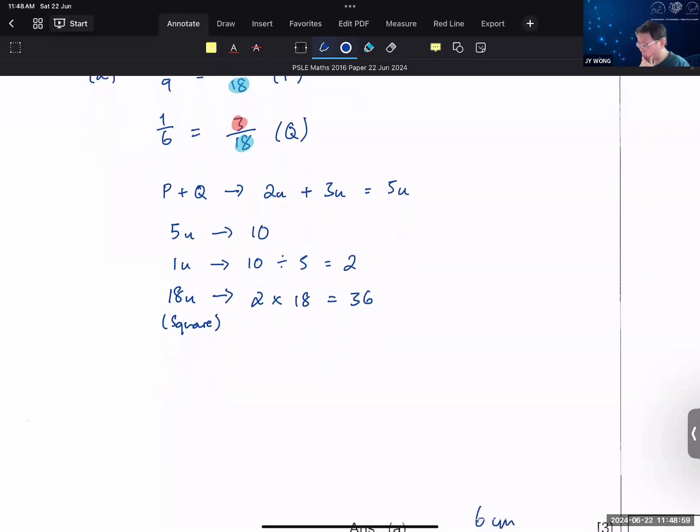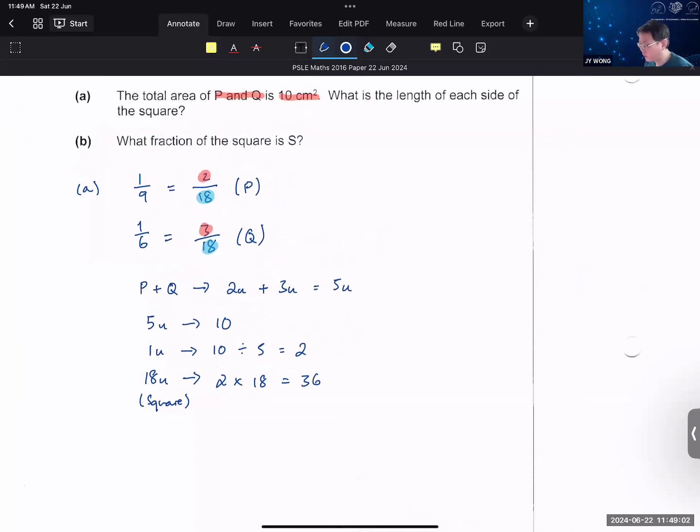So 2 times 18 to give you 36. But please be very careful. That's not the answer. They ask you to find the length. This is your area. And therefore, to find length, you are supposed to square root. And that's how you get 6.